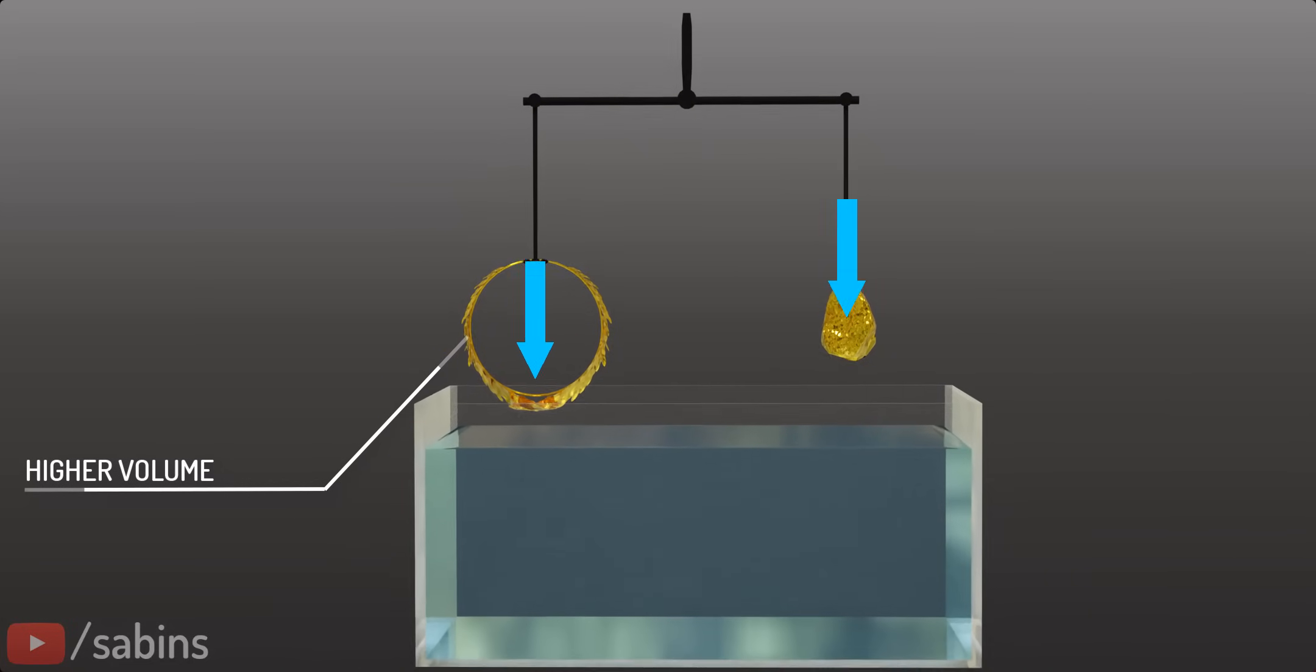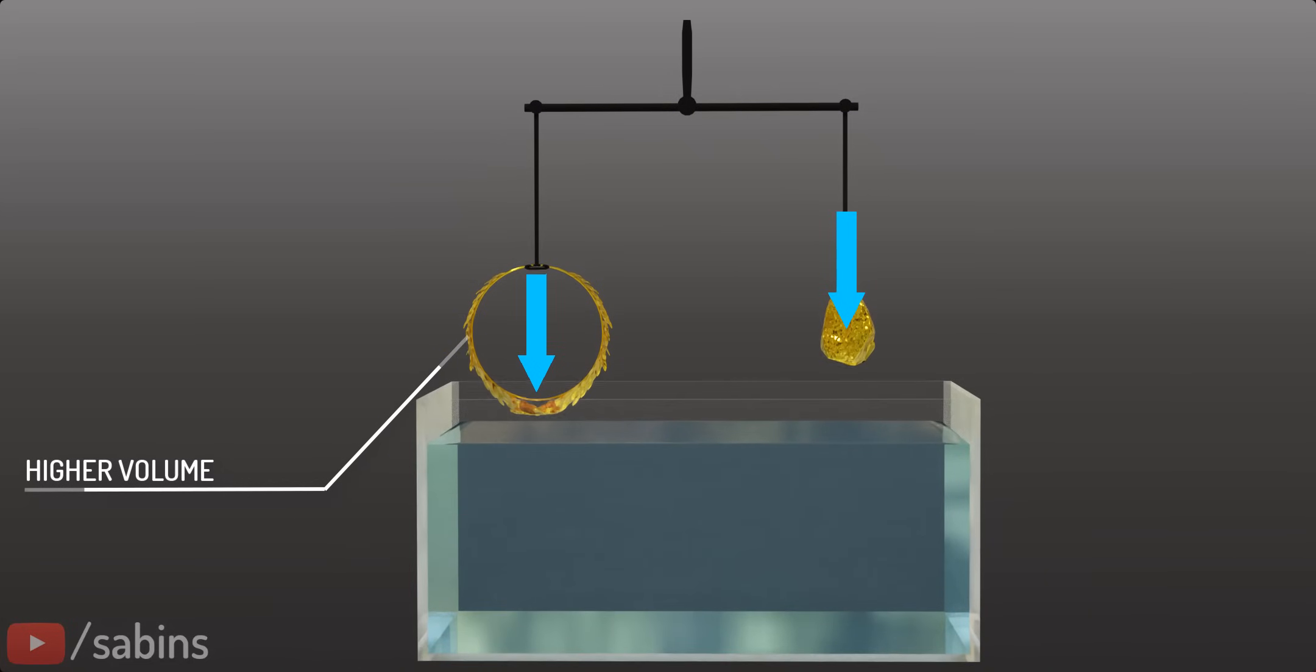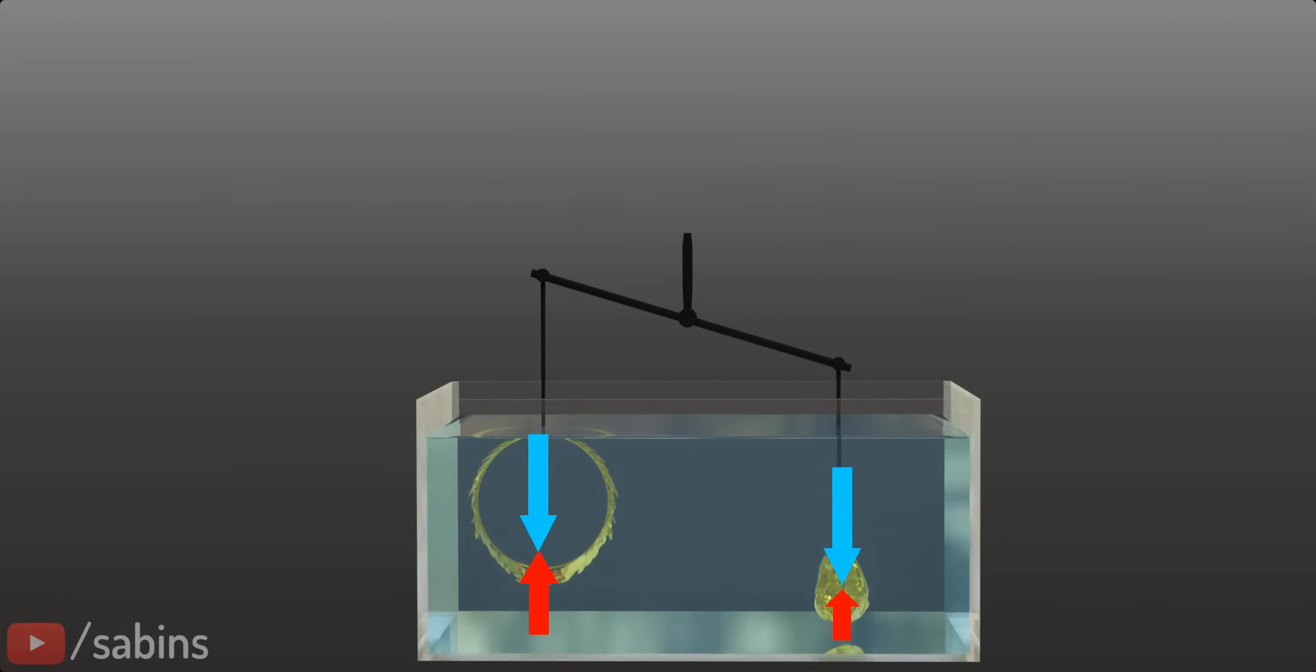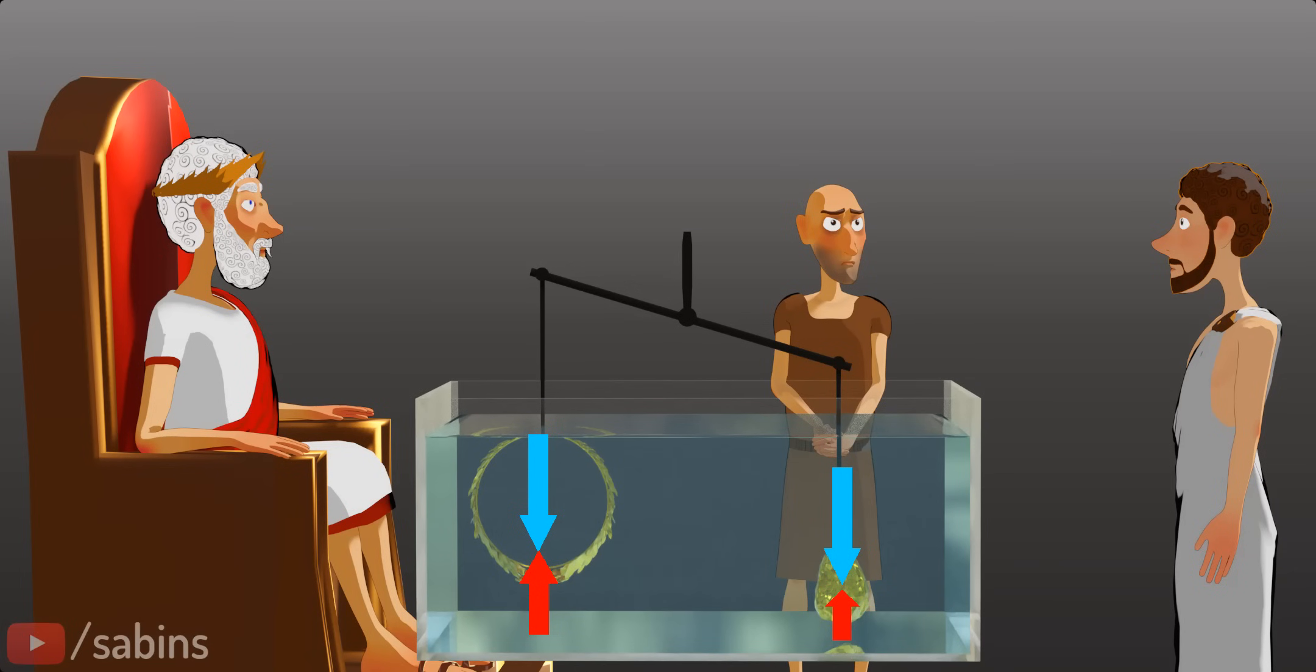The buoyancy force on the crown was more than the gold lump due to its higher volume. This means the net force on the gold lump would be more than the net force on the crown. A balance would tilt due to this force difference. Archimedes discovered the goldsmith's cheating by measuring the difference in buoyancy force.